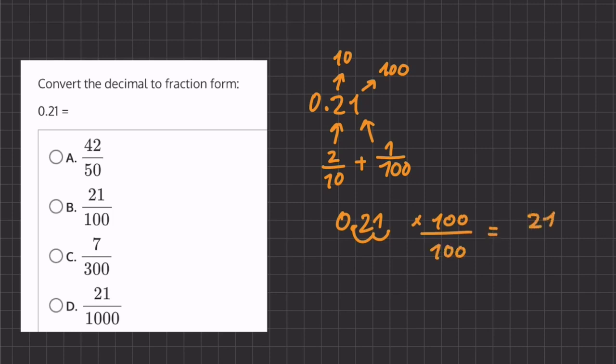So we have 21 because we multiplied 0.21 by 100, and we have our denominator of 100.